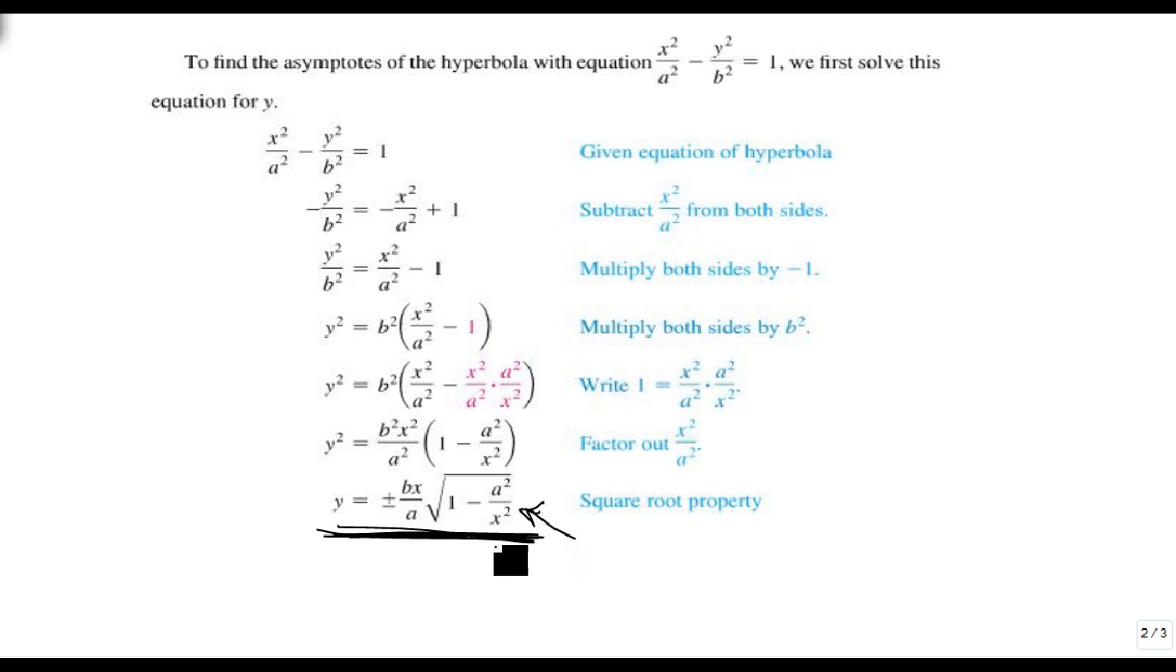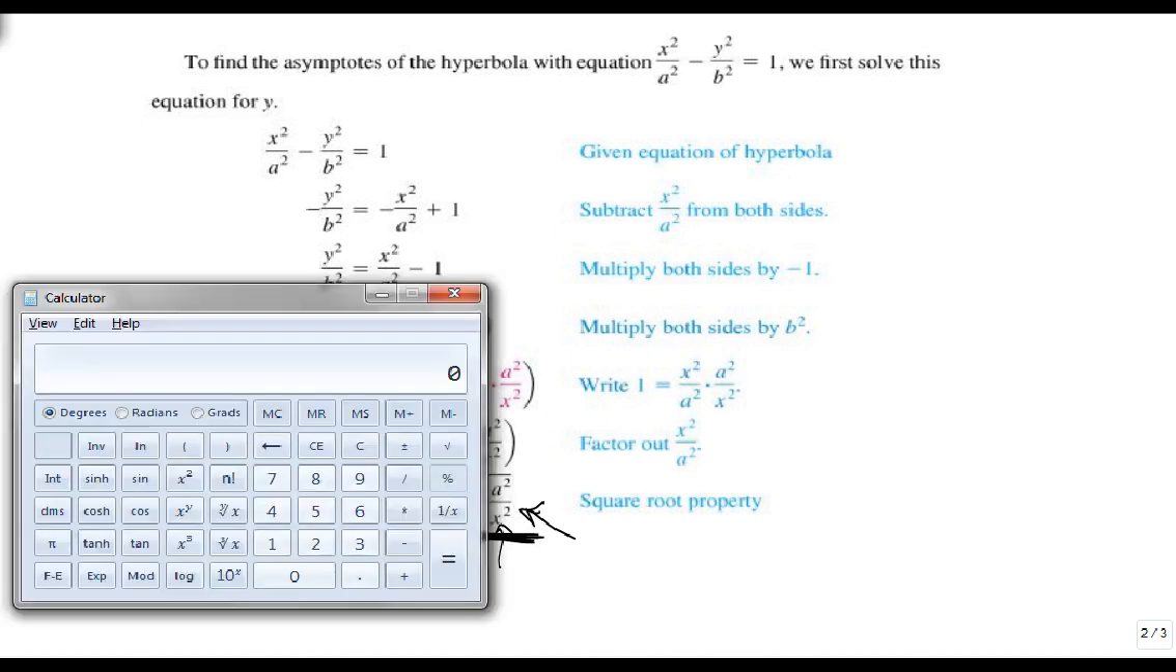But something cool happens when we let x get bigger and bigger. As x gets bigger and bigger, because a is a constant, this gets closer and closer to zero. For instance, if we take 1 divided by 100, we get a small number. As it goes to 1,000, it gets smaller.